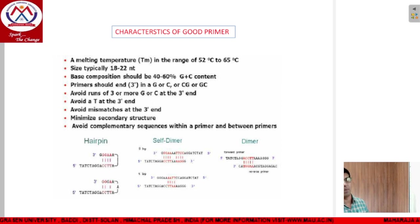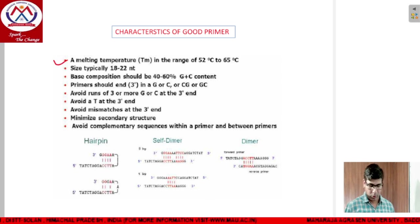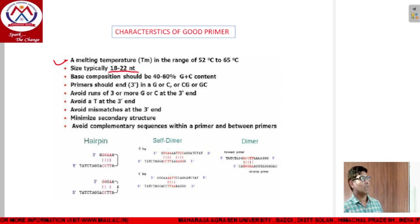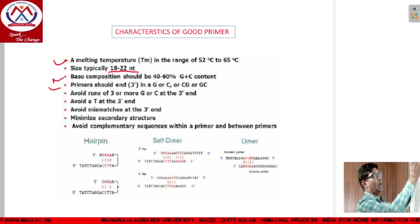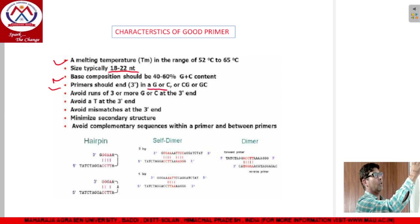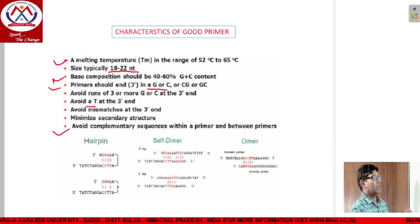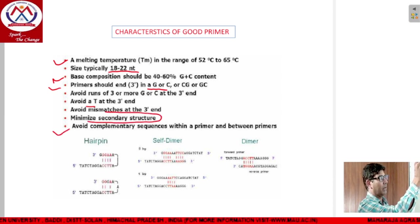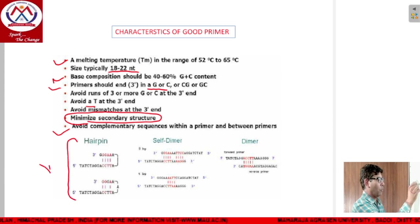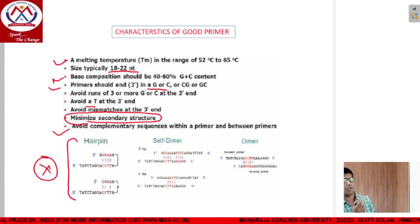The characteristics of primers include: a melting temperature of 50 to 65 degrees centigrade; a size typically from 18 to 32 nucleotides; a base composition of 40 to 60 percent GC ratio; the primer should end at the 3 prime with a G or C component; generally we avoid T at the 3 prime end; and normally they should not have a secondary structure, because if they do they cannot bind to the gene of interest. These are the characteristics of good primers.